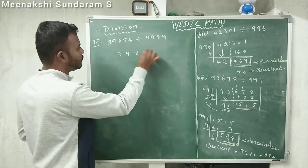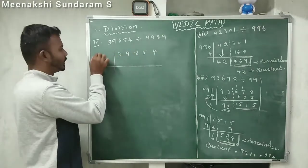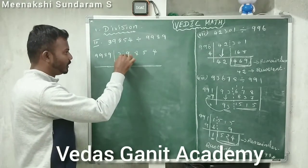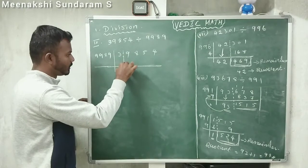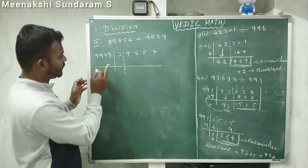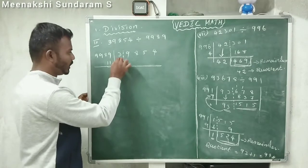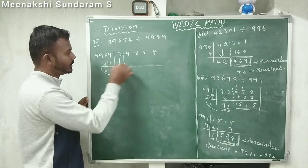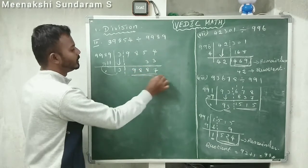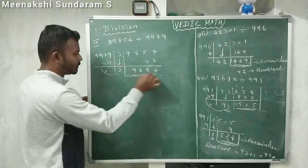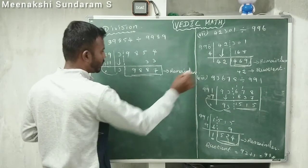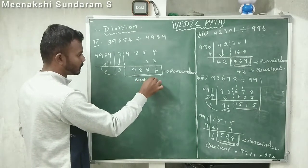Problem 9: 39,854 divided by 9,989. As usual, write 39,854 with the divisor 9,989. Split the dividend by groups of 4 digits since the divisor is a 4-digit number. The base number is 10,000. What do I add to 9,989 to make 10,000? That is 11. Write 11 here. Bring down the first number 3. Multiply 3 into 11: 33. Add 7, 8, 8, 9 — the remainder is less than the divisor. Fix it as the remainder. Quotient is 3.